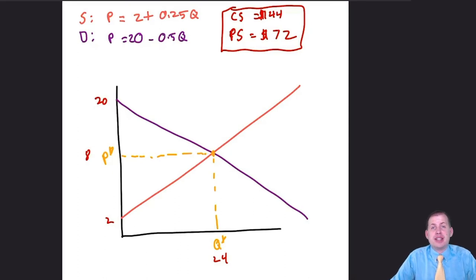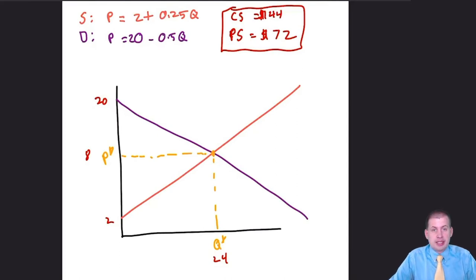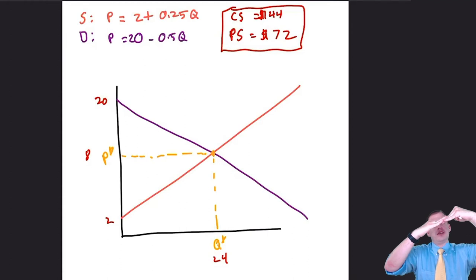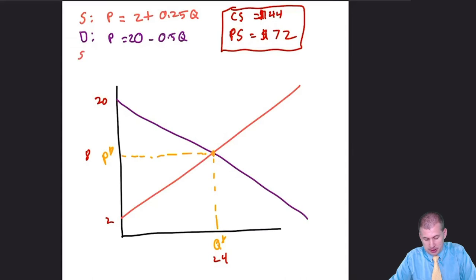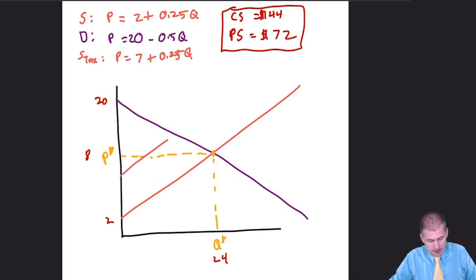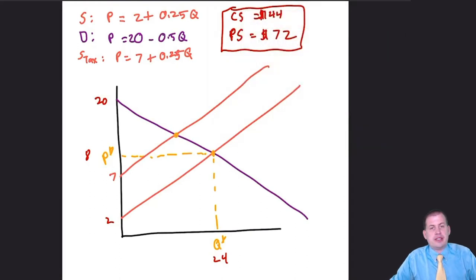Now we're going to change the supply line to account for a new tax. The government imposes a $5 tax on all books, which shifts the whole supply line up by $5. The intercept goes from 2 to 7, so the new supply equation with tax is P = 7 + 0.25Q. This creates a new equilibrium with a new price and a new quantity.